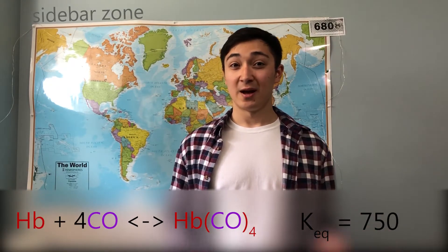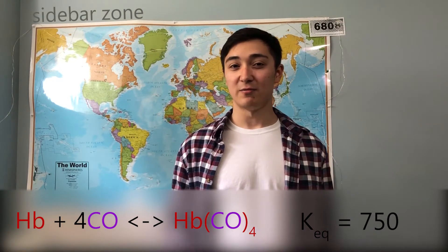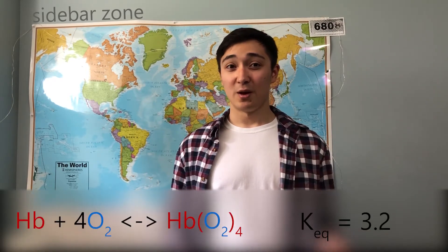This entire reaction can be represented in an equilibrium equation. As a sidebar, we can quantify the molecular affinity of carbon monoxide by looking at the reaction between hemoglobin and carbon monoxide. Because most chemical reactions go forward as well as backwards, we can look specifically at the K equilibrium value of this reaction. For the reaction of hemoglobin and carbon monoxide, the K equilibrium value is 750, meaning the reaction heavily shifts to the side of the products — there's not much dissolution of carbon monoxide.